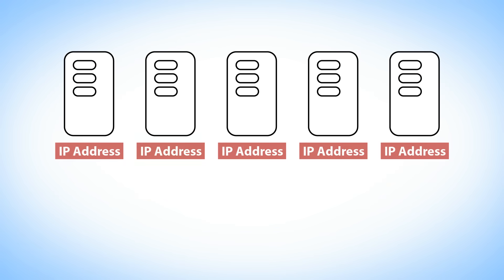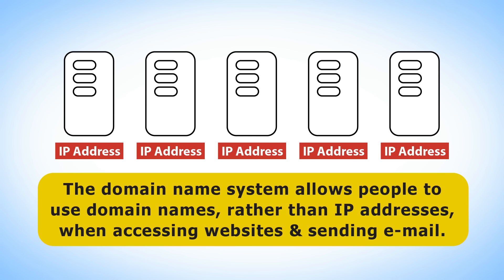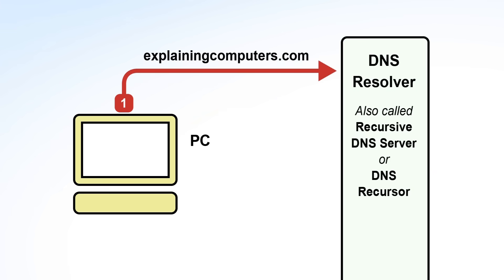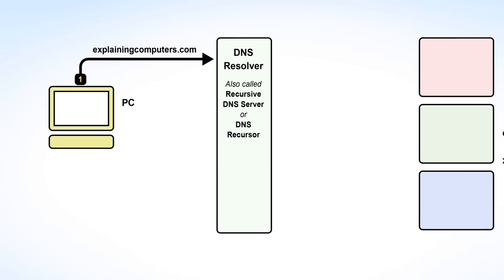Every computer on the internet has an Internet Protocol or IP address to identify it. However, to make life easier for human beings we also have the Domain Name System or DNS. This allows people to use domain names rather than IP addresses when accessing websites and sending email messages. The Domain Name System may therefore be thought of as the internet's phone book. When a user enters a domain name such as ExplainingComputers.com into a web browser, a request or query is sent to a server called a DNS resolver, also known as a recursive DNS server or DNS recursor. This is typically managed by the user's internet service provider and is responsible for finding the IP address that can deliver the service requested. It achieves this goal by querying three other computers called name servers.